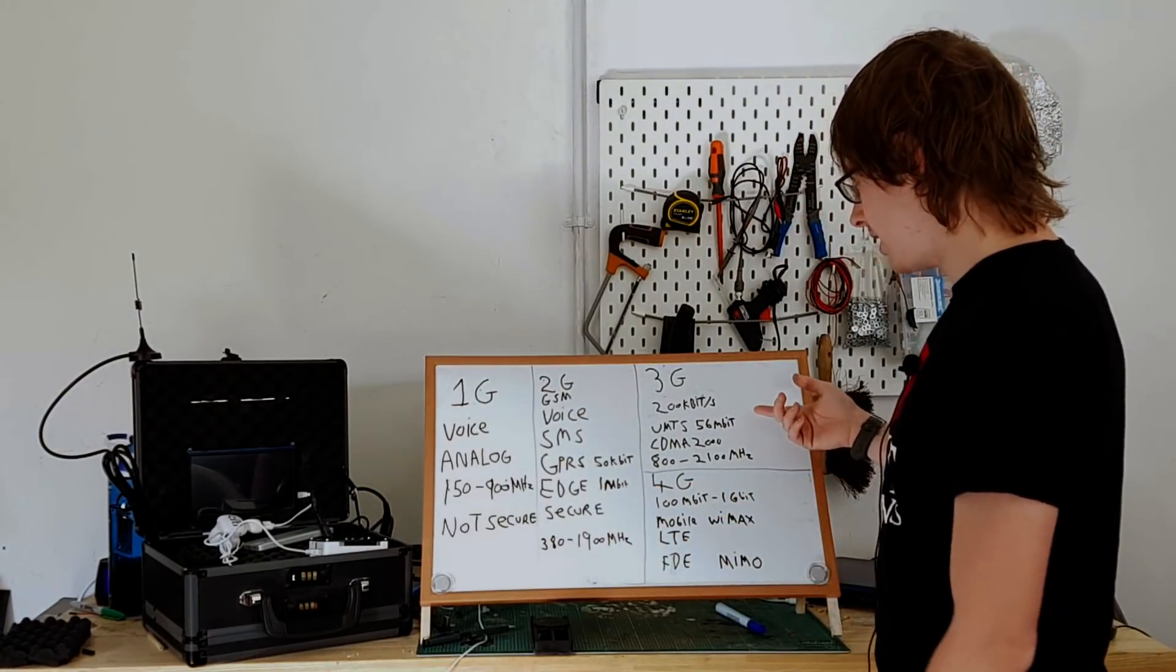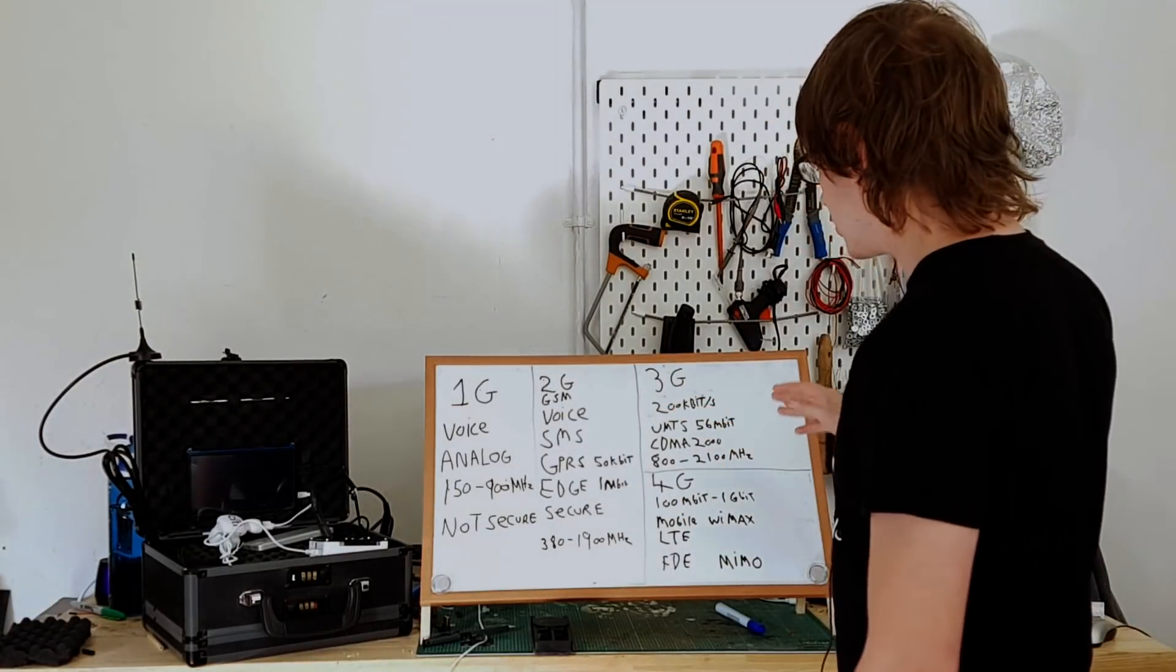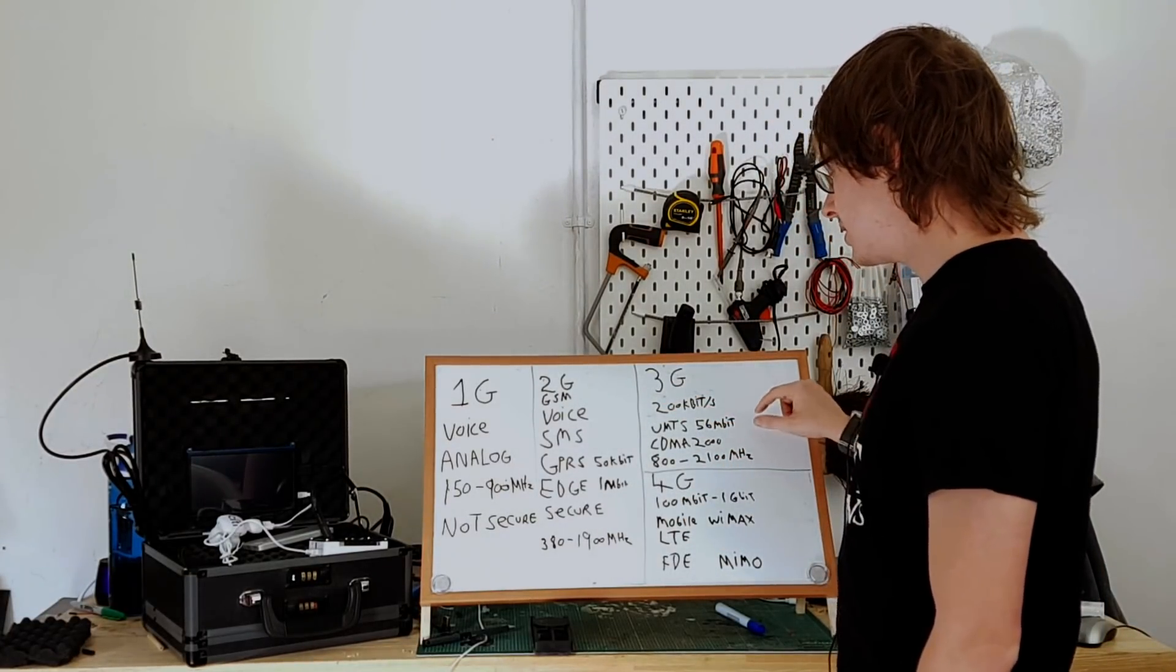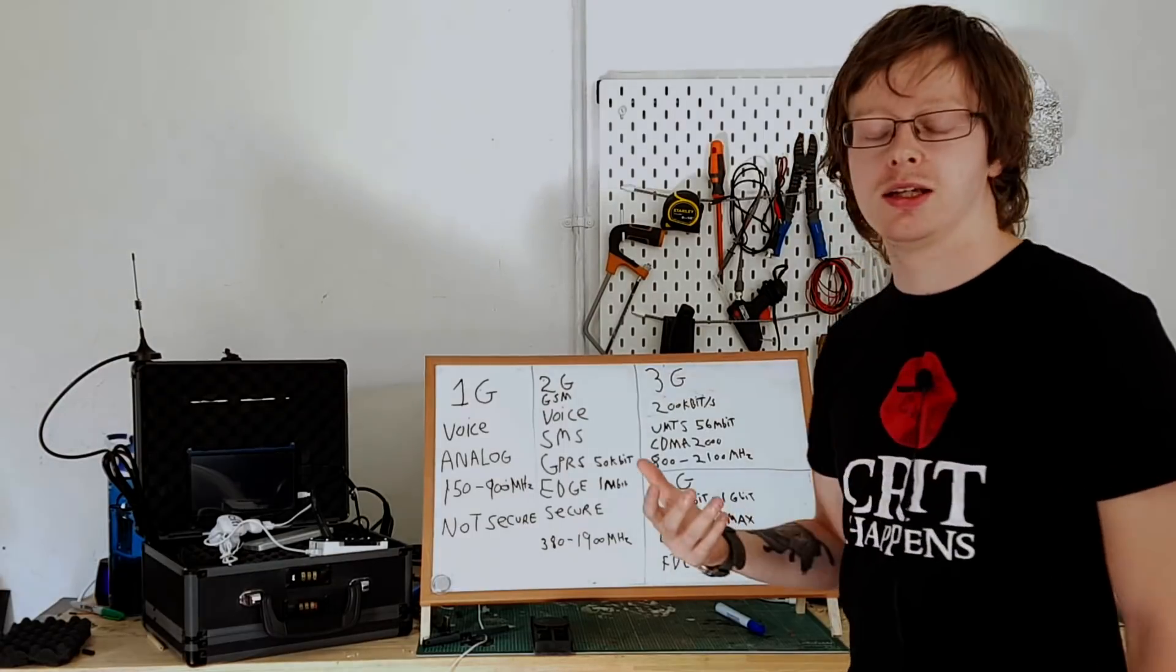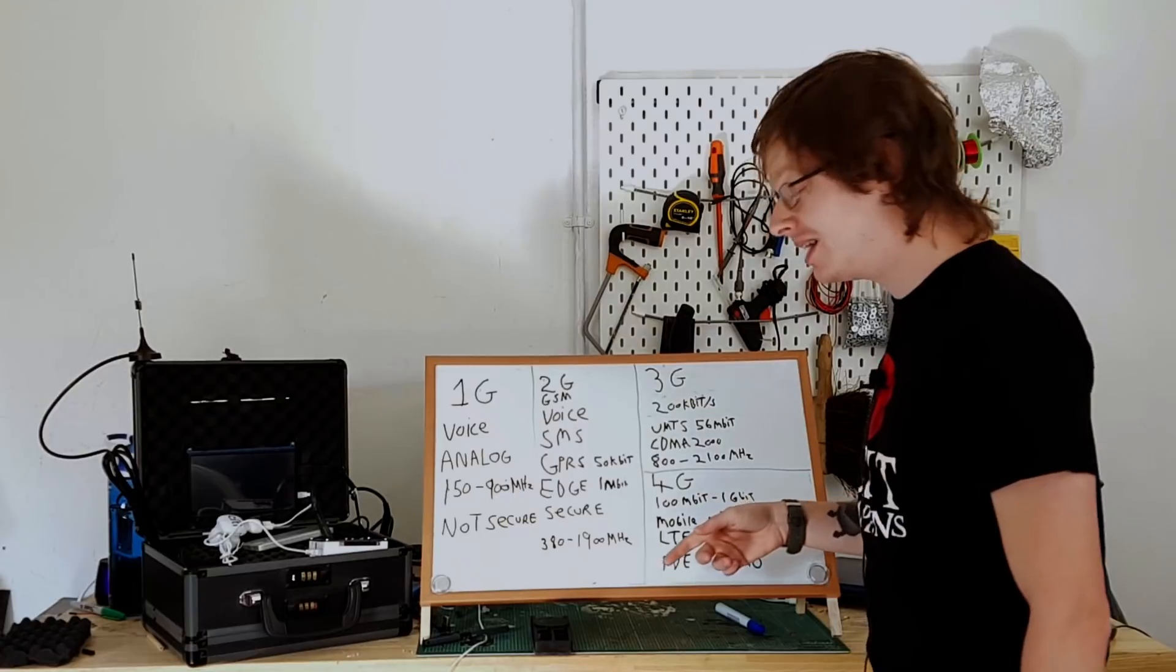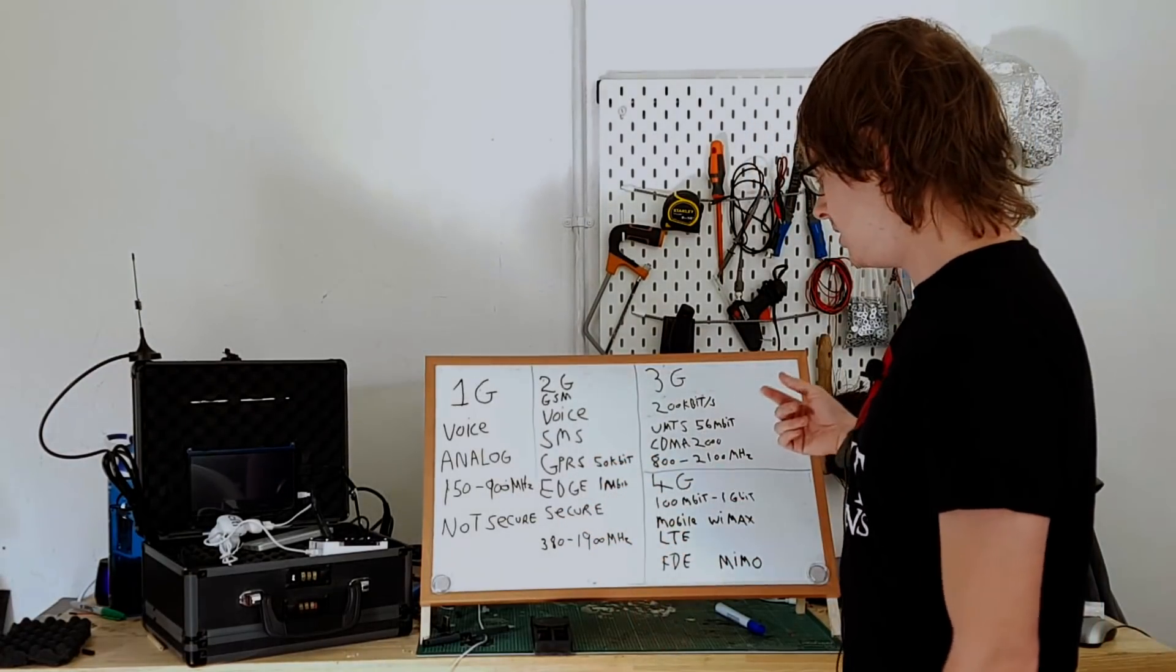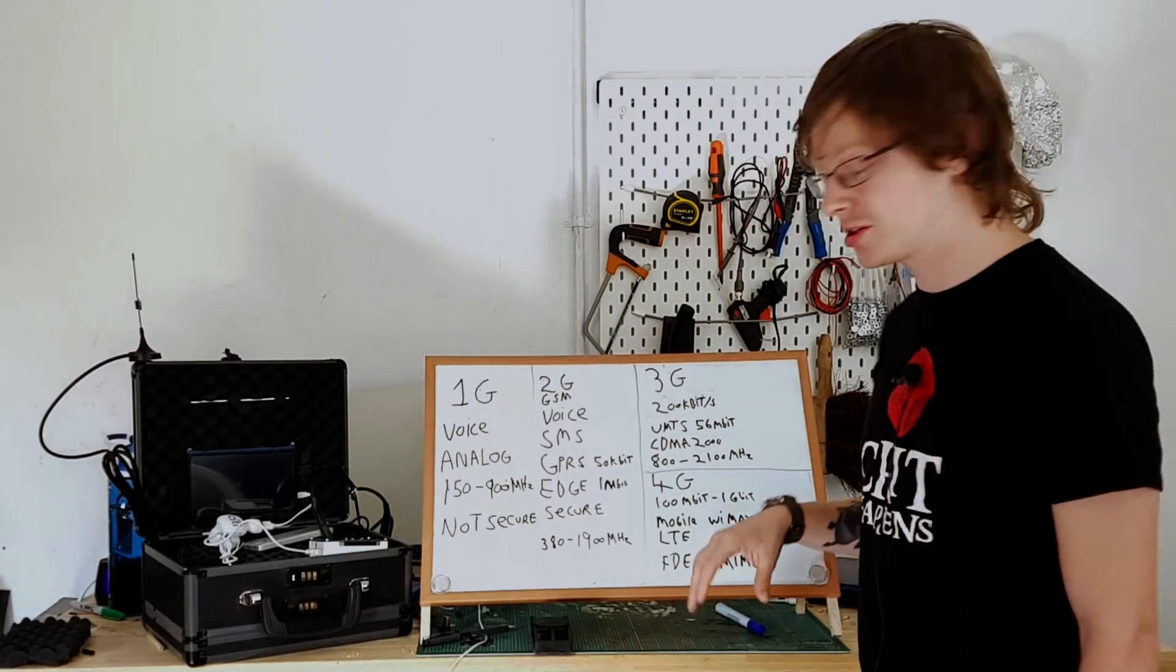The first standards that came out was UMTS, which is universal mobile telecommunications service. It had a theoretical speed of 56 megabits per second. It was also closer to this in the field. It wasn't quite as wild as the EDGE or GPRS where they said yes in ideal circumstances you can get this, but in reality you won't. The UMTS was actually fairly close to the mark. You could get quite close to that.